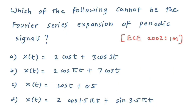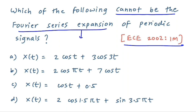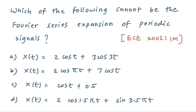GATE Question — Telecom 2002, one mark: 'Which of the following cannot be the Fourier series expansion of a periodic signal?' Fourier series expansion is only possible for periodic signals. If a signal is aperiodic, you cannot apply Fourier series. Your task is to check which of the given options is an aperiodic signal — that option cannot undergo Fourier series and would be the correct answer.